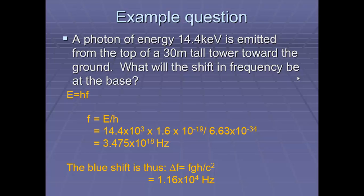So we recognize that energy equals hf. So therefore I can work out the frequency of the light. And once I know the frequency of the light, I can place it into the formula. So therefore the blue shift is 1.16 times 10 to the 4 hertz. And there's an example of gravitational redshift.